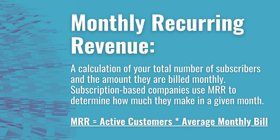Monthly Recurring Revenue, or MRR, is a calculation of your total number of subscribers and the amount they are billed monthly. You can use an average amount for the monthly bill if you have different tiers and different levels. A subscription-based company uses MRR to determine how much they make in a given month. The formula is simple: MRR equals active customers times their average monthly bill.